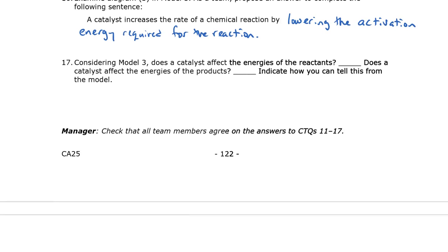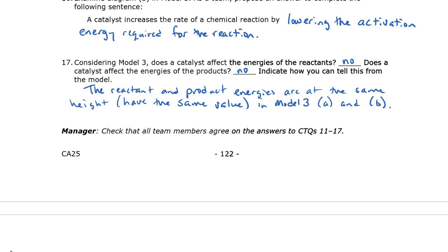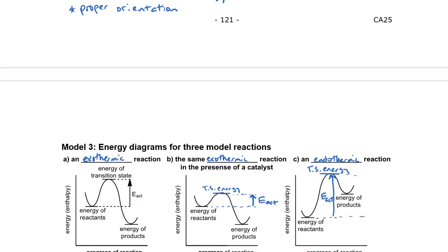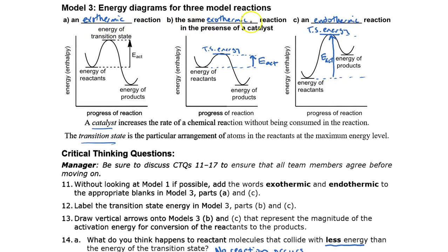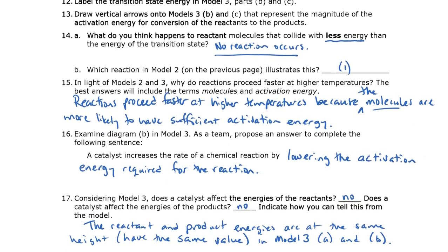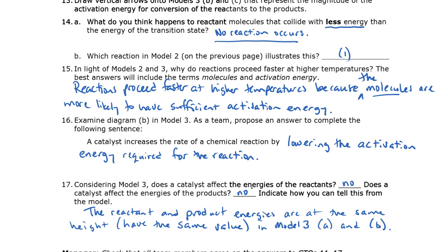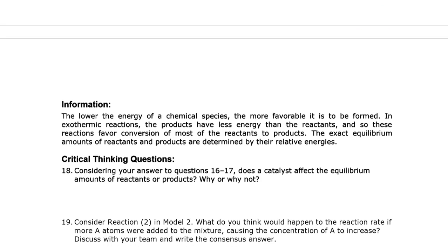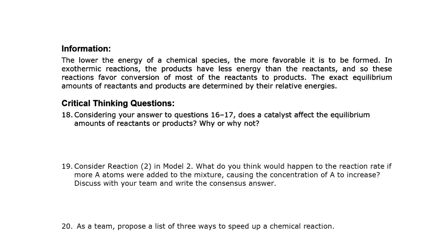Number 17: does the catalyst affect the energy of the reactants or the products? No, the catalyst does not affect the energy of the reactants or the products, because the reactant and product energies have the same value in Model 3, diagrams A and B. If I trace across both diagrams, I see the reactants are at the same energy and the products are at the same energy — only the transition state height differs.